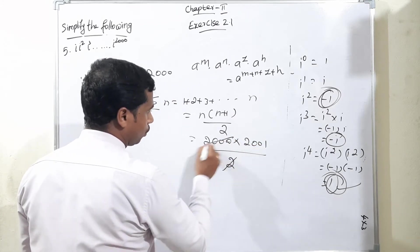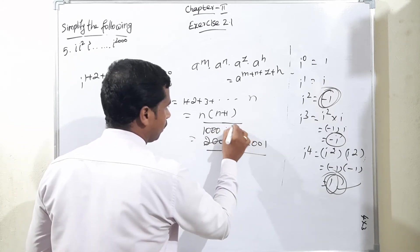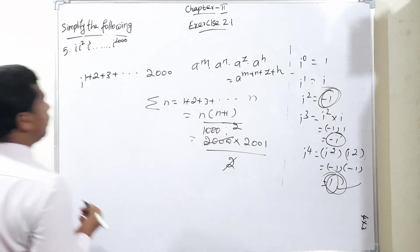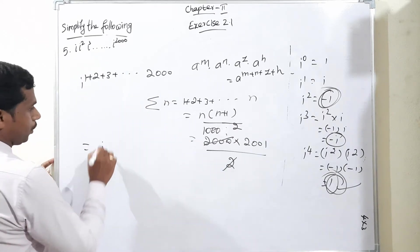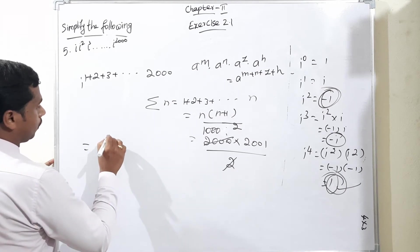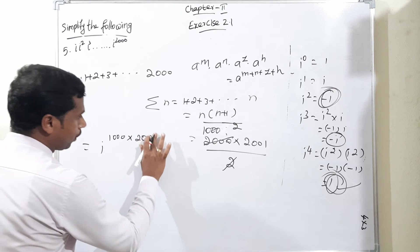So again two and 2000 will be cancelled means 1000 times. So how to rewrite now from that summation: i to the power 1000 times 2001.